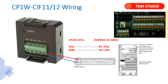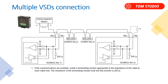RS485 serial communications only needs two wires, whereas RS422 needs four wires. You can connect multiple devices on the same serial communications — for example, 4 or 5 VSDs is fine. However, don't connect too many devices like 10 or 20, as the challenge is serial communications speed and the PLC's memory limitations.